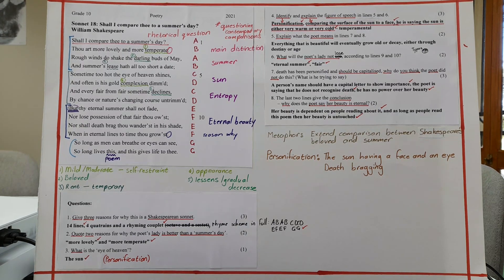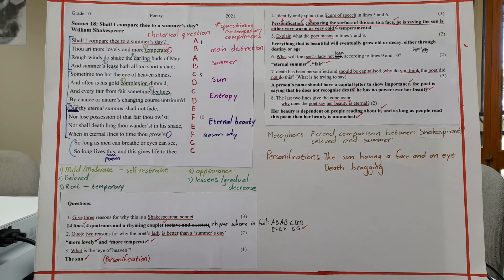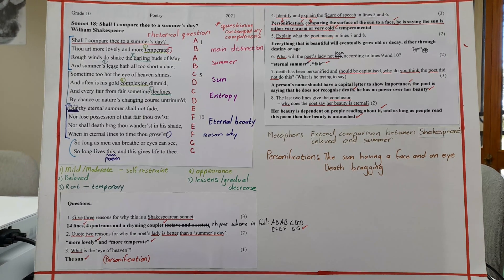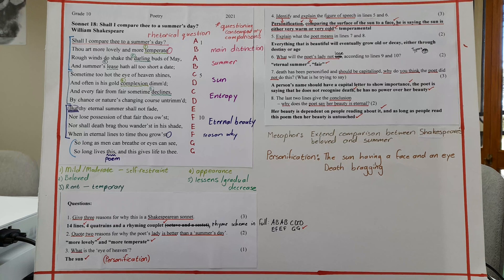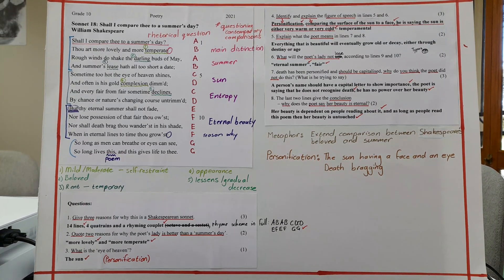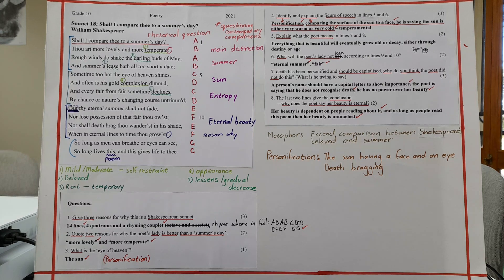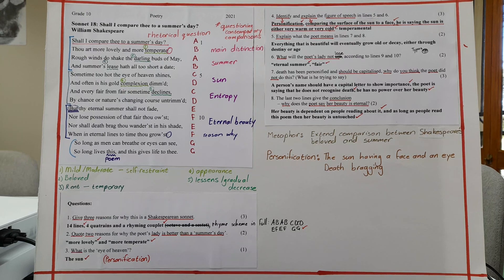The rhyme scheme is also in full. A, B, A, B, C, D, C, D, E, F, E, F, G, G. And if you want to include iambic pentameter, then that would also be a correct answer. Please, three quatrains and a rhyming couplet is worth one mark. Okay, it's worth one mark. It all goes together.